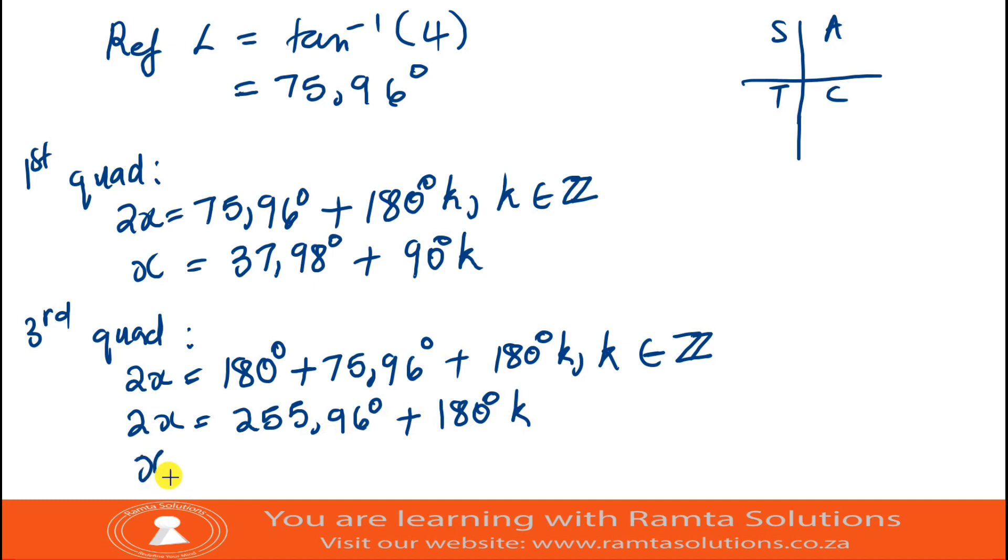Now 255.96 divided by 2 equals 127.98, so x equals 127.98 degrees plus 90 degrees k. This is our general solution, and this is how you go about it. Alright guys, see you next time and bye bye.